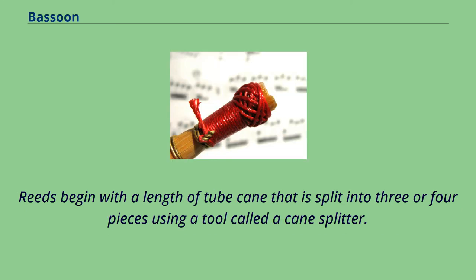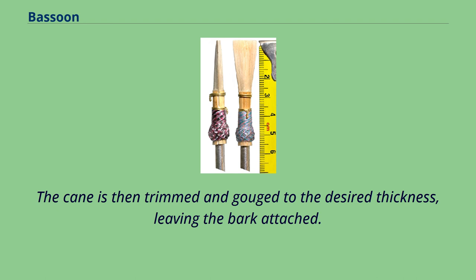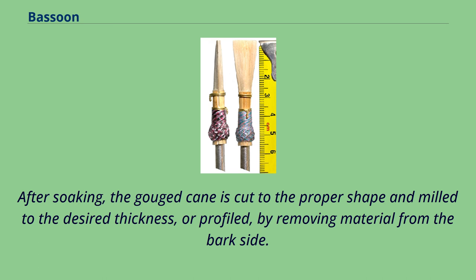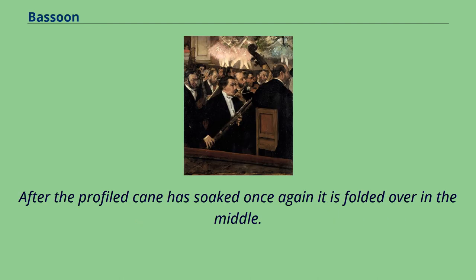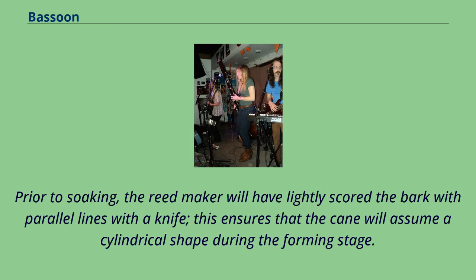Reeds begin with a length of tube cane that is split into three or four pieces using a tool called a cane splitter. The cane is then trimmed and gouged to the desired thickness, leaving the bark attached. After soaking, the gouged cane is cut to the proper shape and milled to the desired thickness, or profiled, by removing material from the bark side. This can be done by hand with a file, or more frequently with a machine designed for the purpose. After the profiled cane has soaked once again it is folded over in the middle. Prior to soaking, the reed maker will have lightly scored the bark with parallel lines with a knife, ensuring that the cane will assume a cylindrical shape during the forming stage.